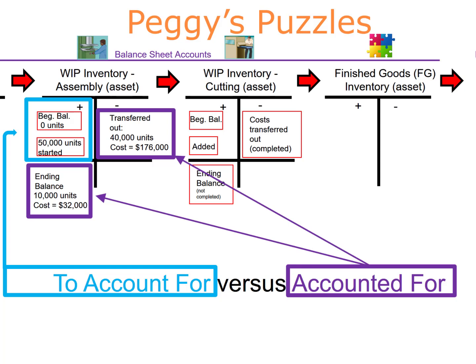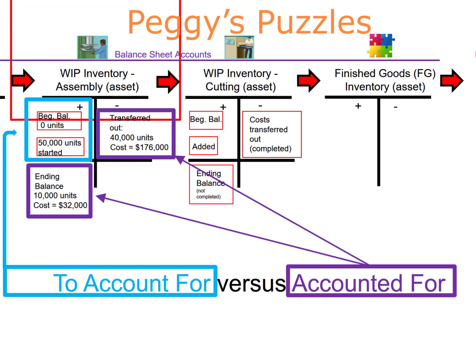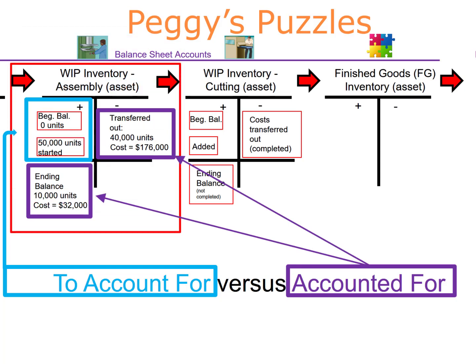We are done with the production cost report for the assembly department. We did all that work to calculate the cost of the 10,000 units still in process at the end of the accounting period, and the cost of the 40,000 units transferred out of the assembly department into the cutting department.